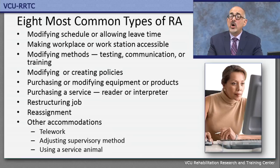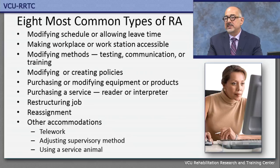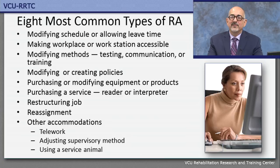If no accommodation can be made within the applicant tracking system, provide an alternate way for the individual to apply. Fourth, modifying or creating policies — for example, if someone with diabetes works in a call center where no food or drink is allowed at the workspace, you may need to modify that policy so they can bring a small refrigerator and have food or drink available. Fifth, purchasing and modifying equipment or products. There is assistive technology for every kind of disability, impairment, and challenge at work.